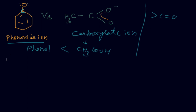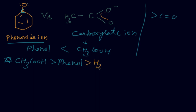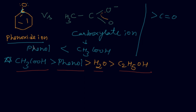Now it is time to sum up. The order of acidity is: ethanoic acid is the strongest acid, then phenol, then water, and finally ethanol is the weakest. This is the complete summary of the acidic character of ethanoic acid, phenol, water, and ethanol. This is a very important topic — if you have any queries feel free to contact me. Thank you!